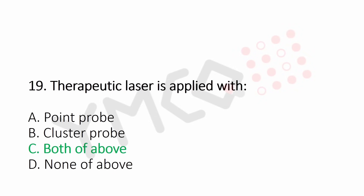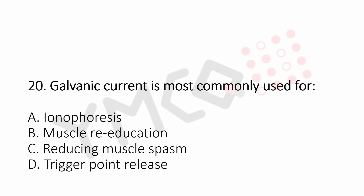Question 20: Galvanic current is most commonly used for — Option A: iontophoresis, Option B: muscle re-education, Option C: reducing muscle spasm, Option D: trigger point release. The answer is Option A: iontophoresis.